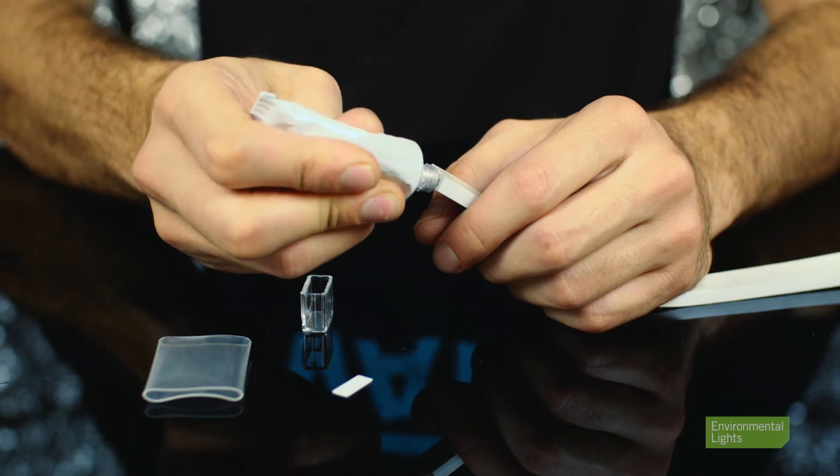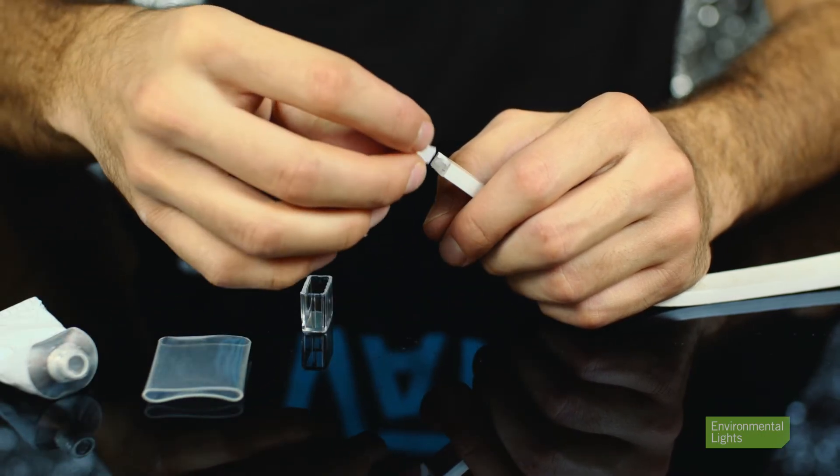First, put a bit of sealant onto the end of the light. Then place the shading sheet onto the end of the light.